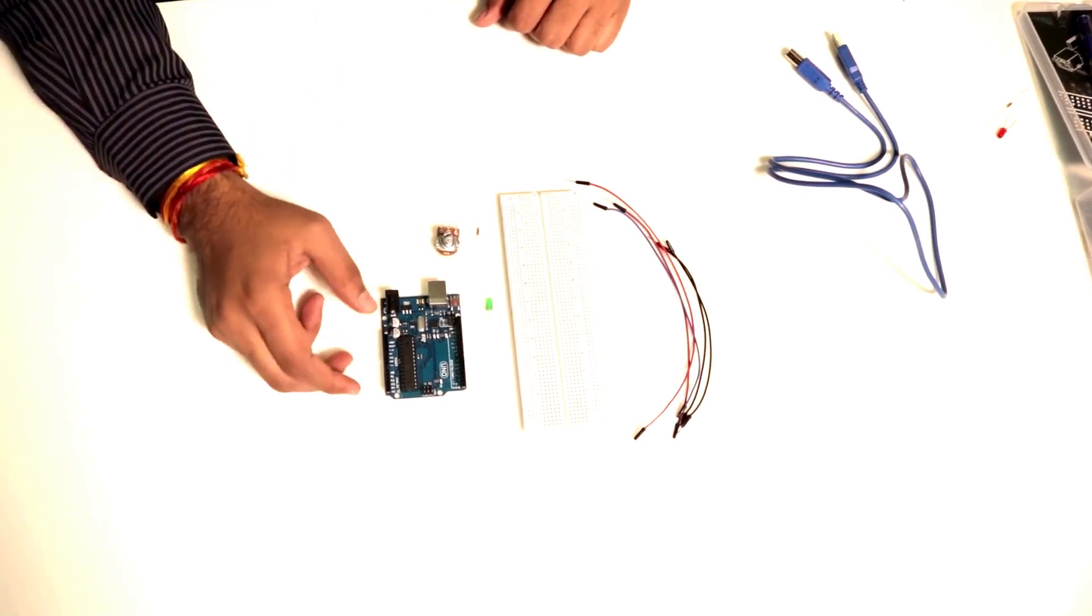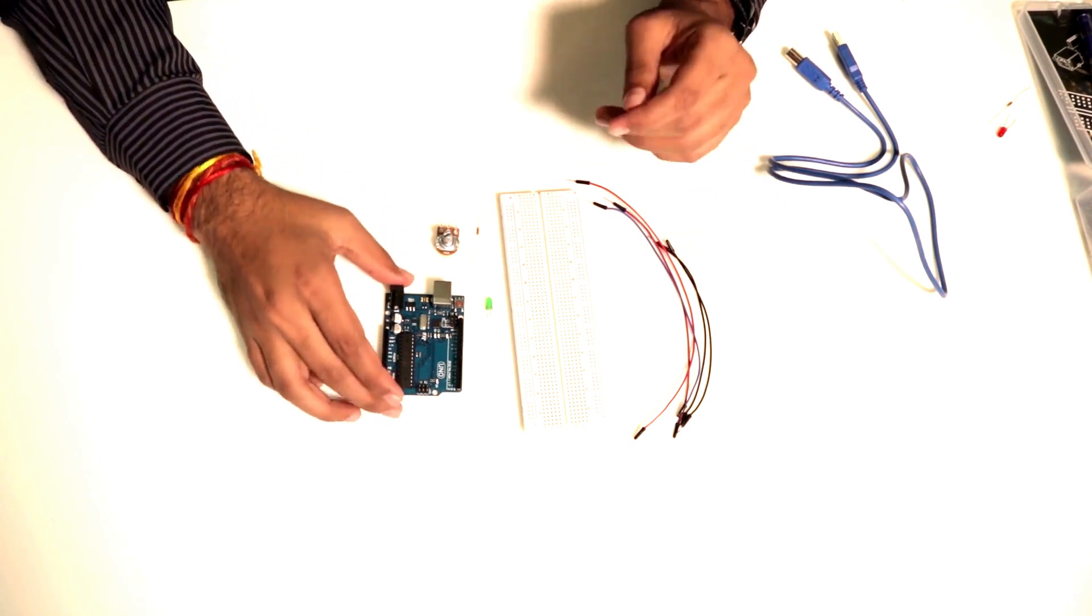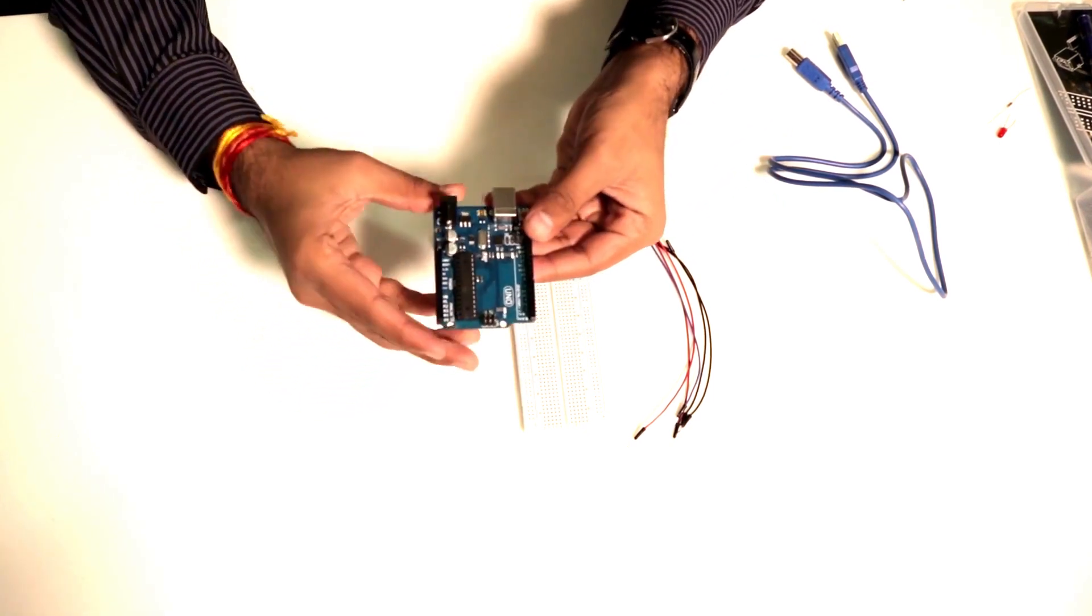So guys, our objective is to control the LED brightness by using the potentiometer with an Arduino.